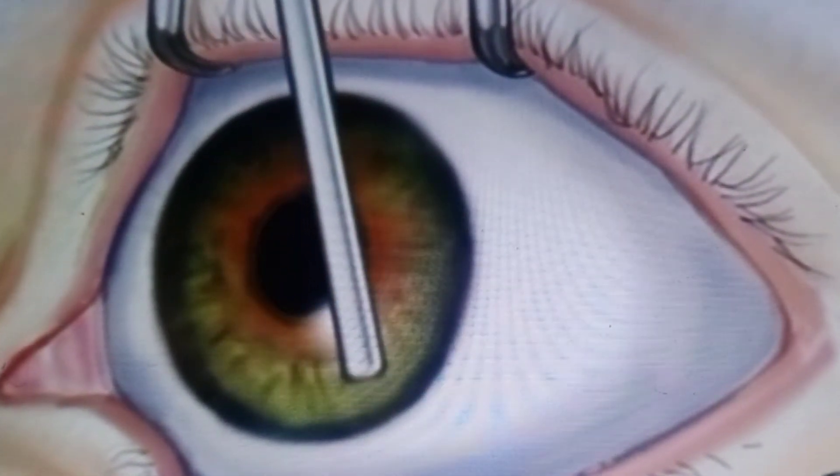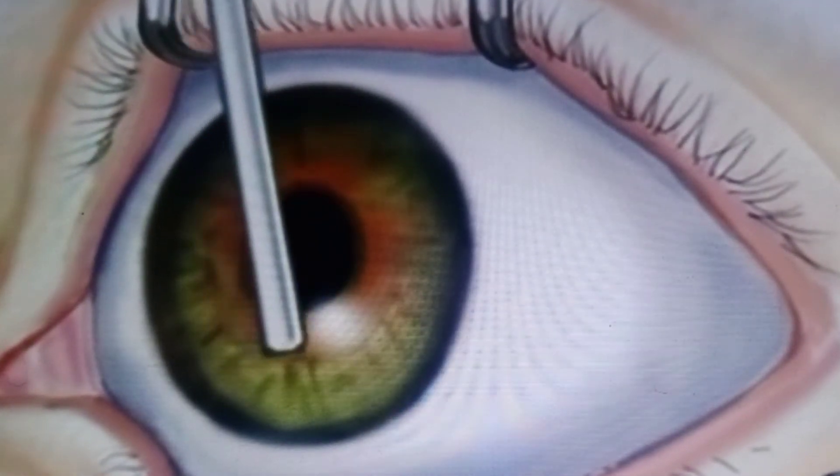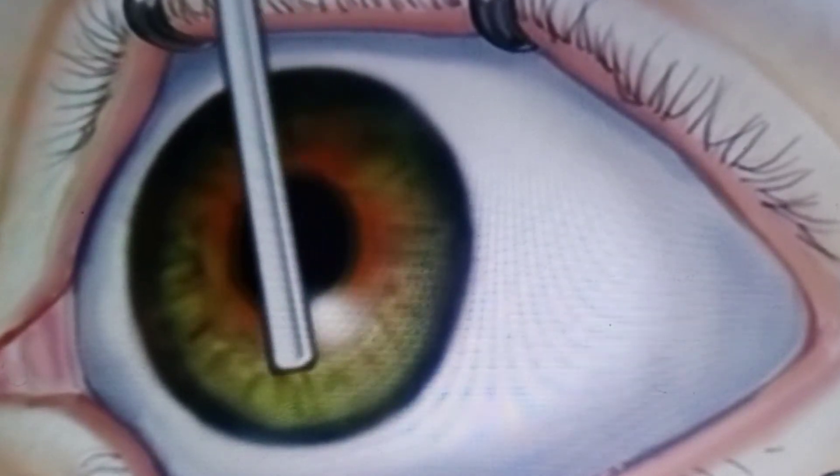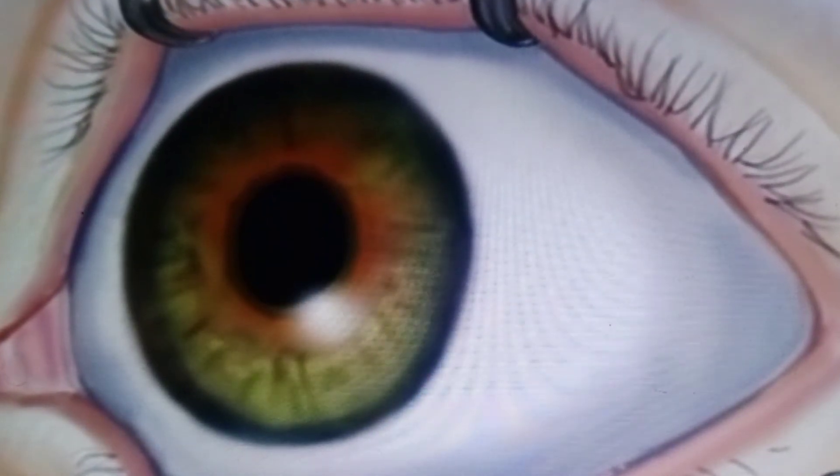When the operative field is numb, the doctor will carefully remove the epithelium, or top layer of cells, exposing the stroma, the non-cellular portion of the cornea.